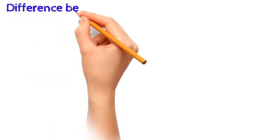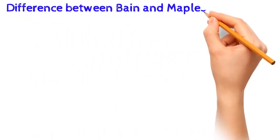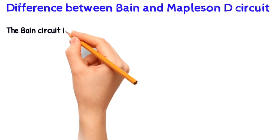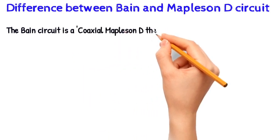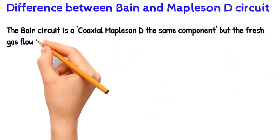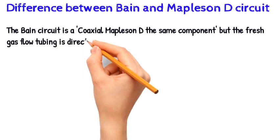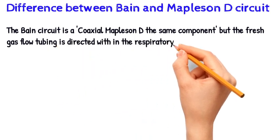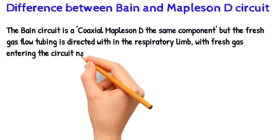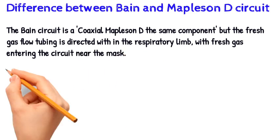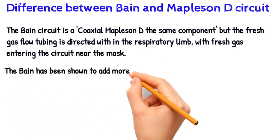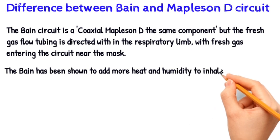The difference between the Bain and Mapleson D circuit: the Bain circuit is coaxial, while the Mapleson D has the same components but the fresh gas flow tubing is directed within the respiratory limb, with fresh gas entering the circuit near the mask. The Bain circuit has been shown to add more heat and humidity to inhaled gases than other Mapleson circuits.